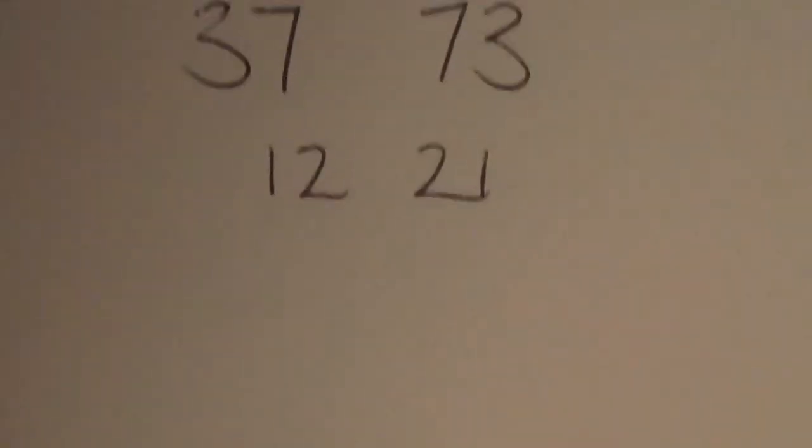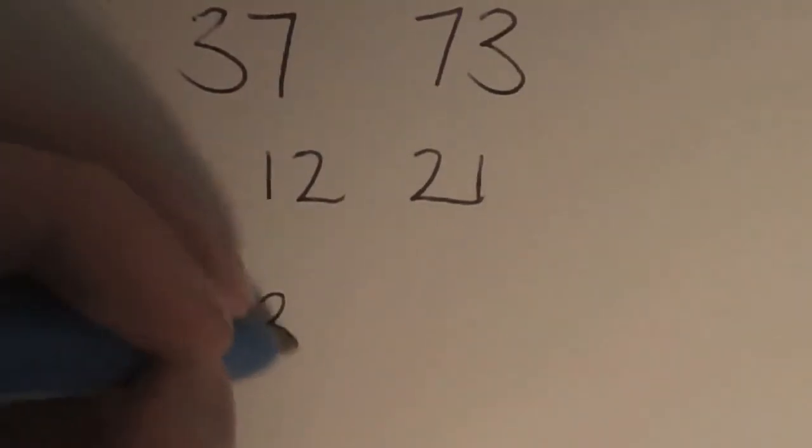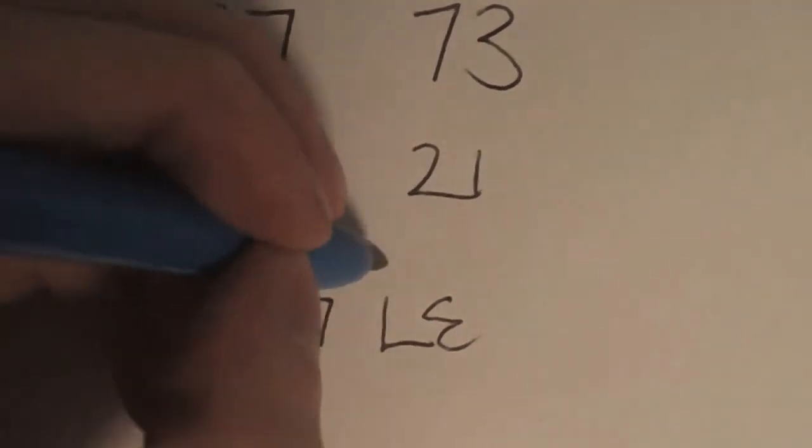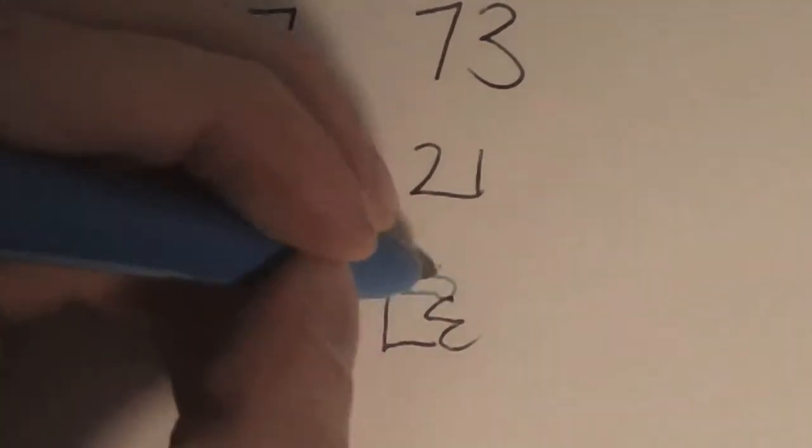Let's see here. 37 rotated around looks like L, E. And the numbers, of course, 12, 5. And it sort of looks like 1251, which is one of my favorite little patterns.